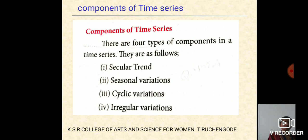First, we see secular trends. Secular trends means it is the general tendency of time series to increase or decrease during a long time period. Next, we see the seasonal variation. As the name suggests, these movements are due to nature which repeat themselves predictably in every season.